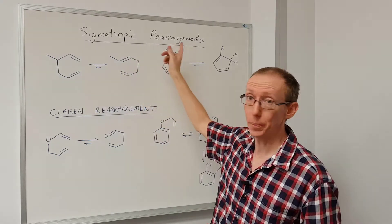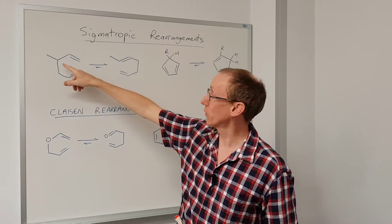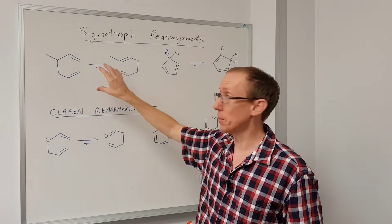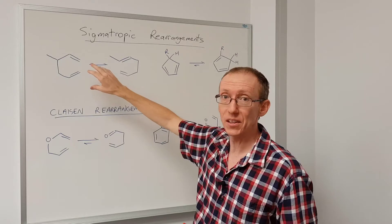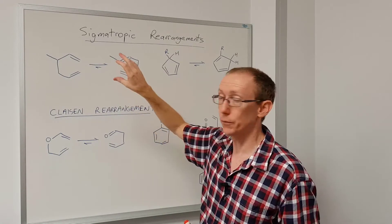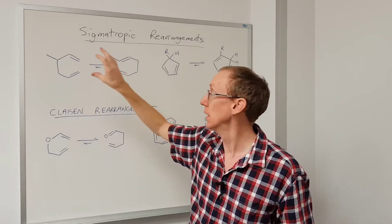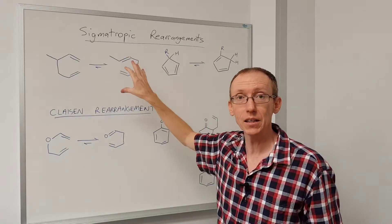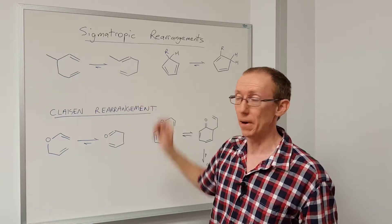This video is about sigmatropic rearrangements, which involve migration of a sigma bond around a system. In a sigmatropic rearrangement overall there's no change in the number of sigma or pi bonds, and so we need to look for structural features within the molecule on the left versus the molecule on the right to see which side the equilibrium may favor.